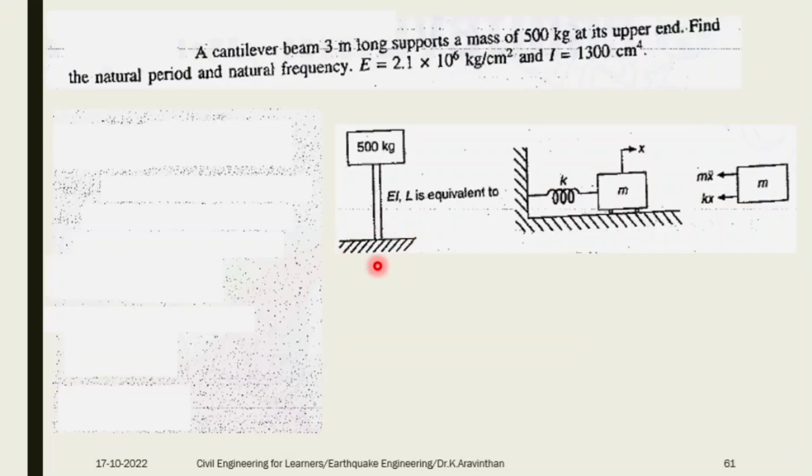Here you have a cantilever beam. One end is fixed, other end is free and carrying a mass of 500 kg at its upper end. Find the natural period and natural frequency. They have given E and I: E in terms of kg per cm² and I in terms of 1300 cm⁴. Given data: length L, mass m, Young's modulus, and I. You should draw the figure with fixed end at one side, other side free carrying 500 kg. Make it as a system with stiffness and mass.